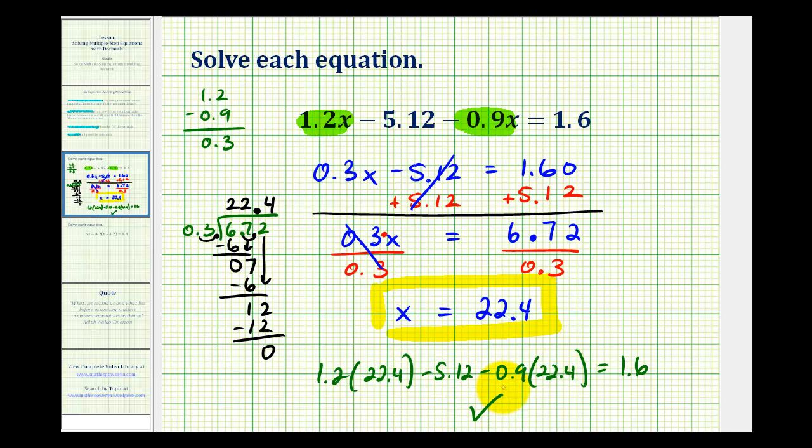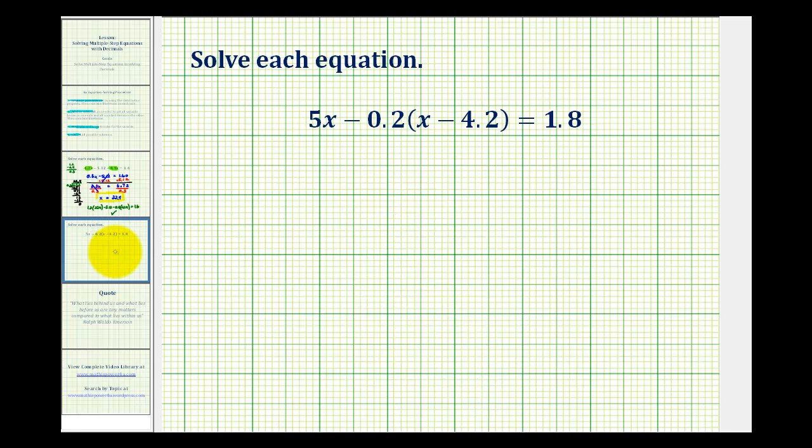Let's take a look at a second example. Here the first step is going to be to clear the parentheses. And because we're subtracting here, it's probably going to be easier if we think of this as distributing a negative 0.2 here and here. So we'll have 5x. Then we'll have minus 0.2x. Here you can think of this as a negative times a negative. So it's going to be positive. So we'll have plus 0.2 times 4.2.